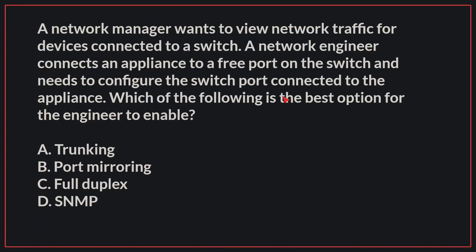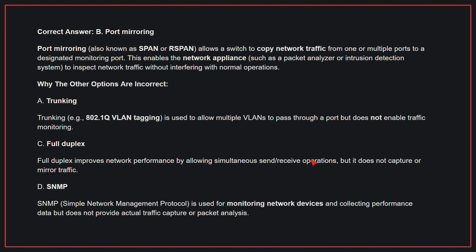A network manager wants to view network traffic for devices connected to a switch. A network engineer connects an appliance to a free port on the switch and needs to configure the switch port connected to the appliance. Which of the following is the best option for the engineer to enable? The correct answer is B: Port mirroring. Port mirroring allows a switch to copy network traffic from one or multiple ports to a designated monitoring port, enabling the network appliance to inspect network traffic without interfering with normal operations.